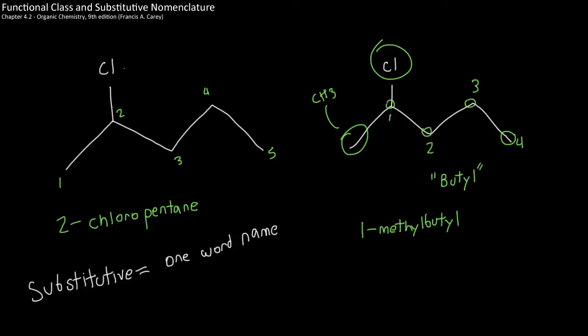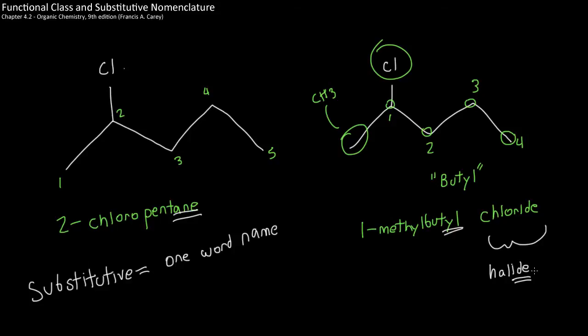There are four carbons in the longest chain from the halide, which gives us butyl. Since it's not the parent compound in the traditional sense — the Cl is acting as the parent — we use the YL ending: butyl. There's also a methyl group attached at carbon one, so the first word is 1-methylbutyl. The second word is the halide name: chloride. So the full functional class name is 1-methylbutyl chloride.